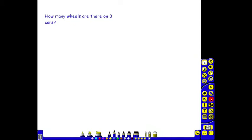By the end of Year 2, children need to be able to interpret situations as multiplication calculations and explain their reasoning. So, for example, how many wheels are there on 3 cars? Children may use repeated addition.